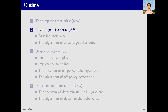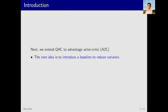Now, let's move to the second part, which is about the advantage-actor-critic method, abbreviated as A2C. Why is it called A2C? Because there are two A's here. A2C is essentially an extension of QAC, and its core idea is to introduce a new baseline or bias term to reduce the variance in estimation.